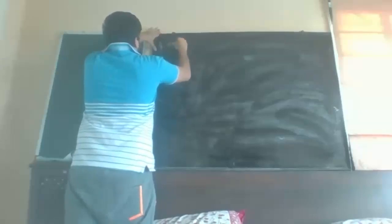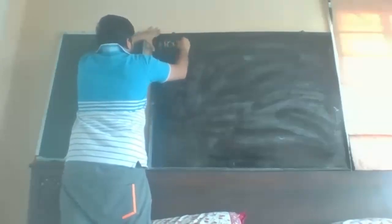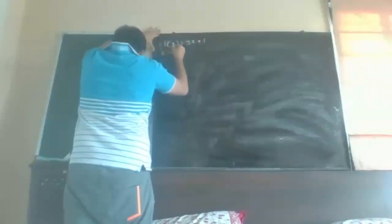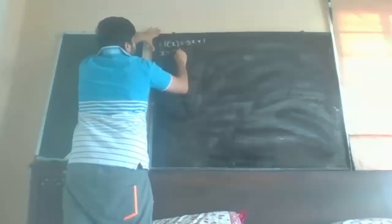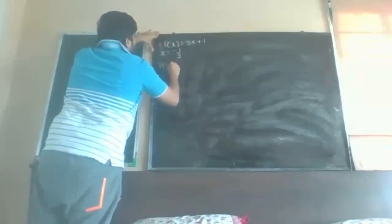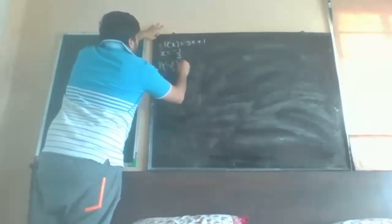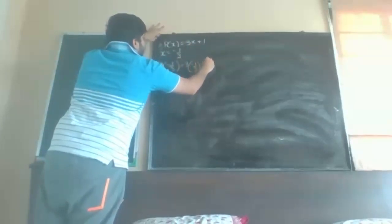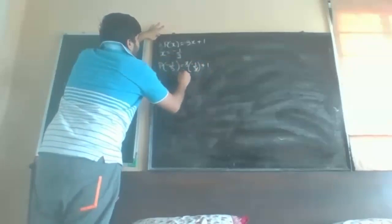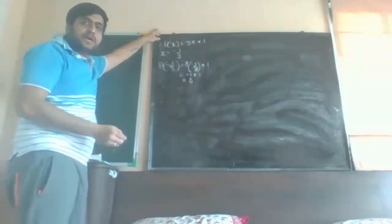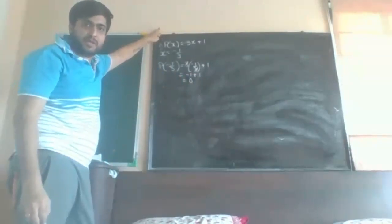First: p(x) = 3x + 1, and x value is given as minus 1 by 3. We substitute p(−1/3): 3 into minus 1 by 3 plus 1. The 3 gets cancelled, giving minus 1 plus 1, and the answer is 0. So yes, it is a zero of a polynomial.